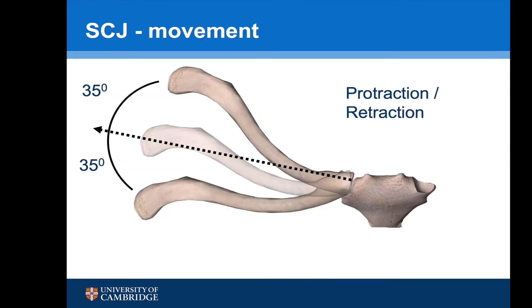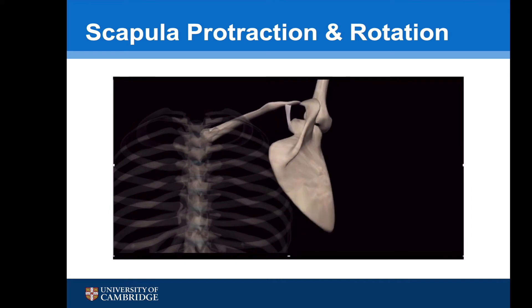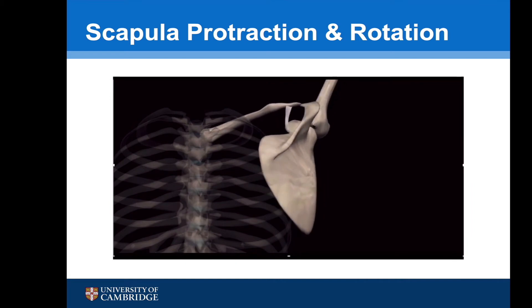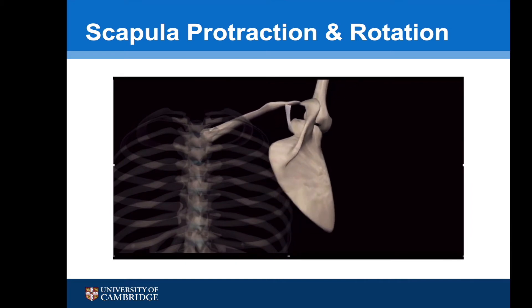The SC joint also allows 35 degrees of protraction and retraction. On the animation we can see that protraction moves the scapula forwards and slightly rotates it upwards.